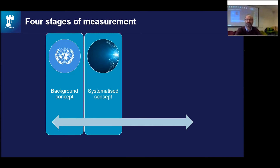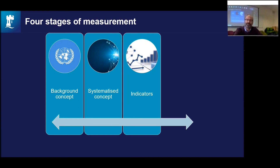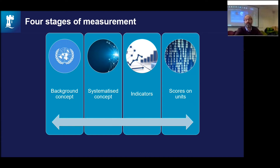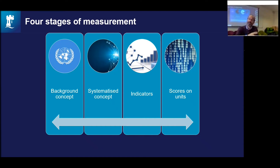That content then needs to be systematized, broken down into different categories, and operationalized into a series of indicators we can collect. Ultimately, we reveal data sets that I refer to as scores on units — whatever that unit might be: an individual person, a group, a household, a community, a subnational unit like a municipality or department, or a whole nation state. Those scores will vary over both time and space, with time units ranging from days to months to years.